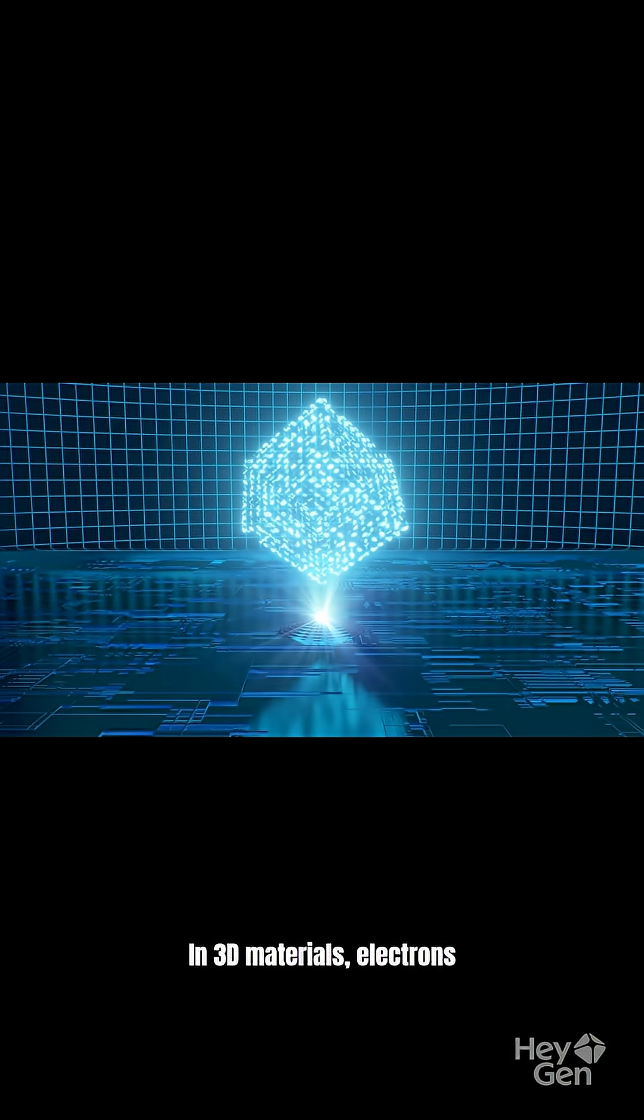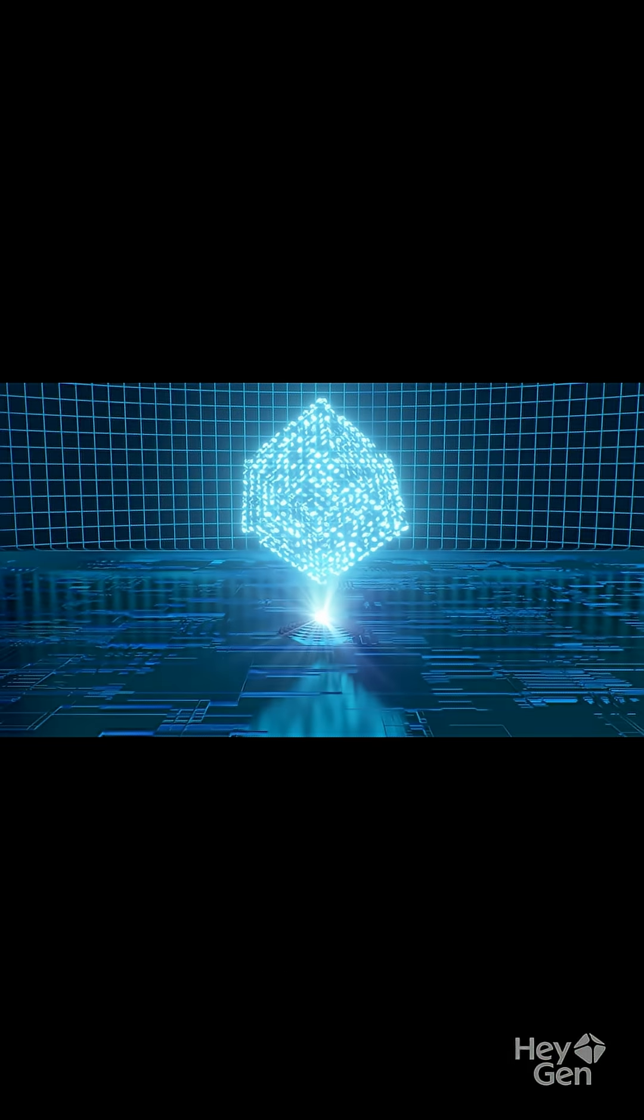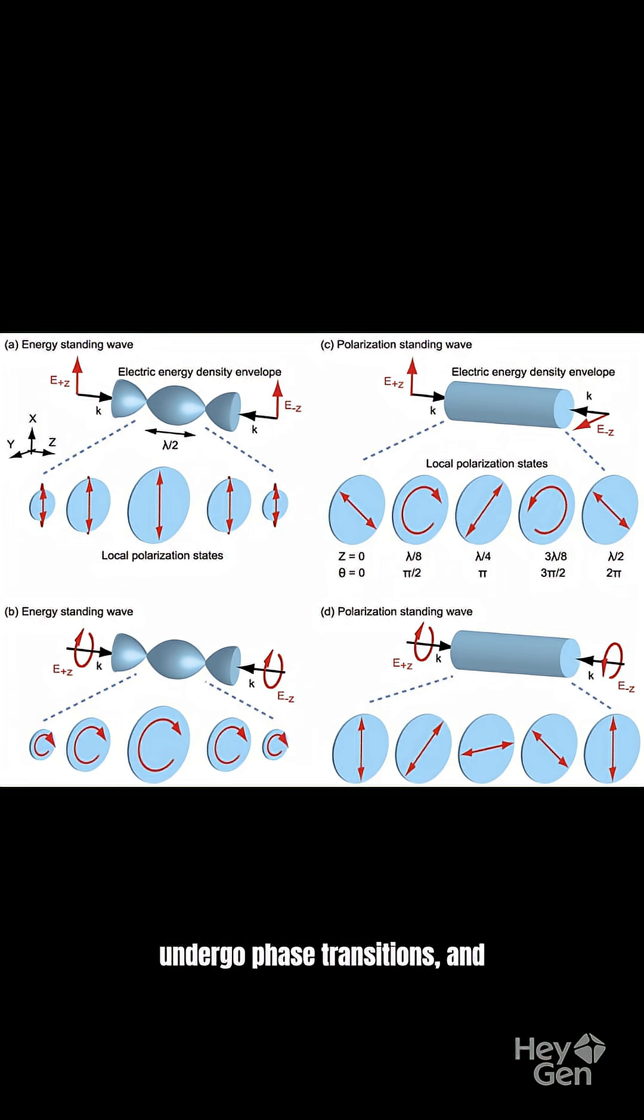In 3D materials, electrons move freely. In 2D materials like graphene, they're confined to a plane. But in 1D, electrons behave differently. They form standing waves, undergo phase transitions, and follow quantum rules we've only theorized about.